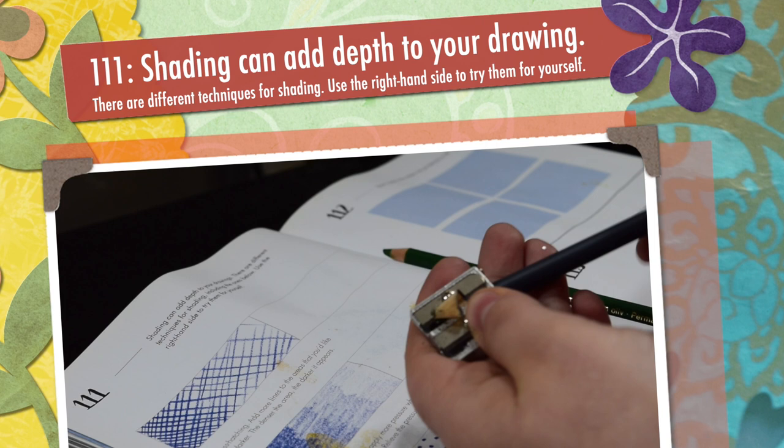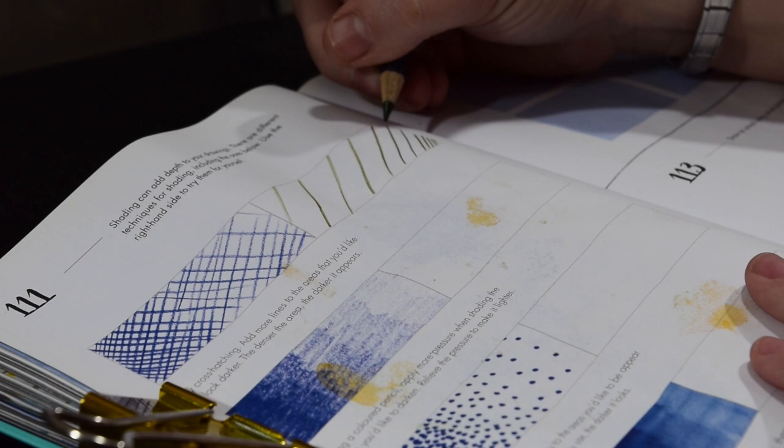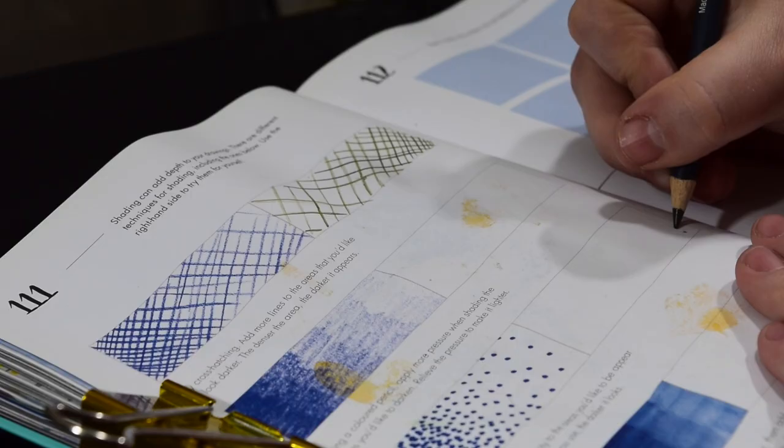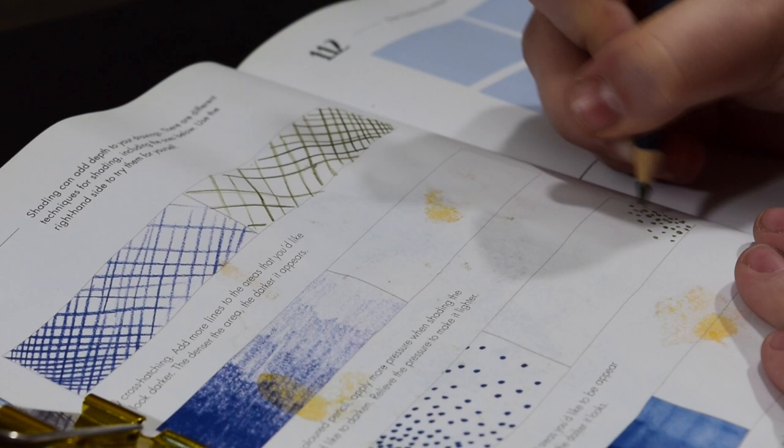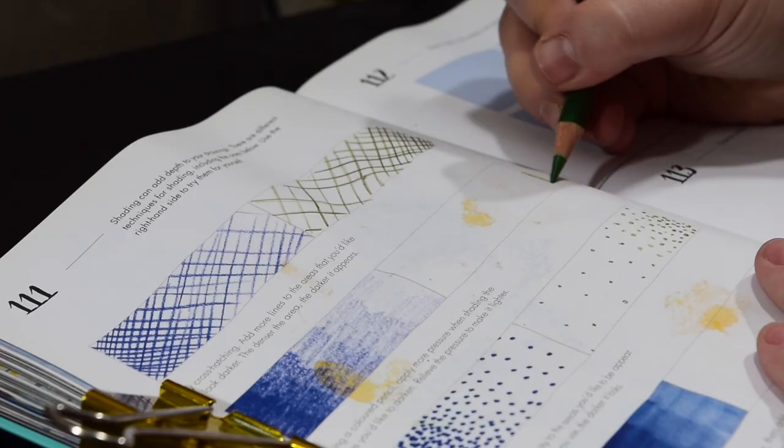So we've got some cross-hatching. You can make it look darker by putting the lines closer together, and then the more the lines are dispersed, that's when it looks lighter. Then I'm going to go on to the dots. When they're all together in one spot it looks darker, whereas when you disperse them they look a lot lighter. Then we're using a colored pencil, applying more pressure to one side and then relieving the pressure to make it lighter.